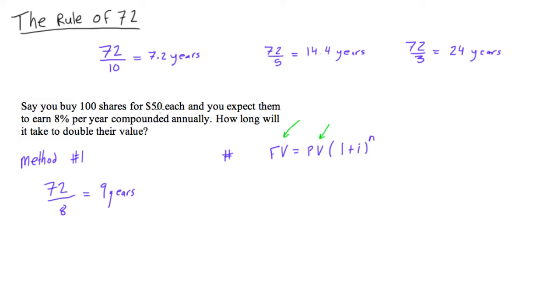So first we'd have 100 times 50 so we would have 5,000. Right, that's our investment is $5,000. And we want to double it so our future value will just be 10,000. Our interest rate we know is going to be 8%, so this will be 0.08.